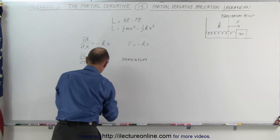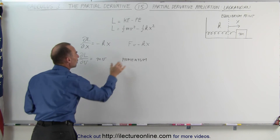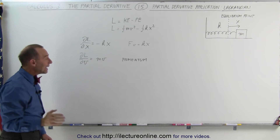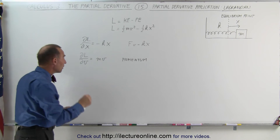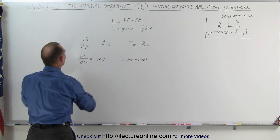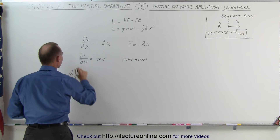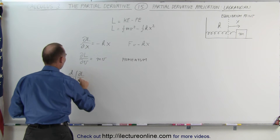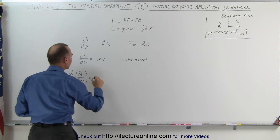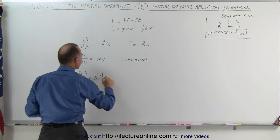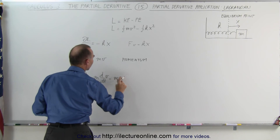When we take the partial derivative of the Lagrangian with respect to the variable v, we get the momentum. Now, if we take the derivative with respect to time — not the partial, but the derivative with respect to time — of the partial of L with respect to v, this is equal to m times the d/dt of the velocity, which is equal to m times a, the acceleration.